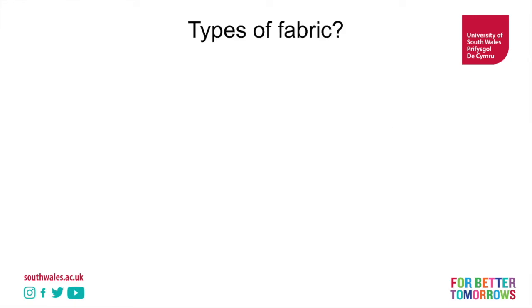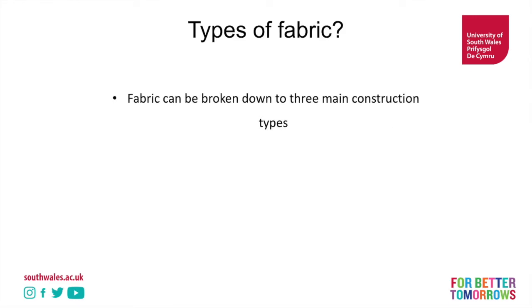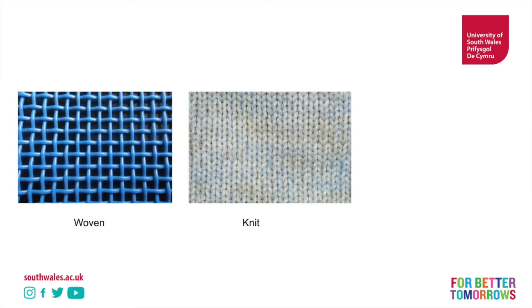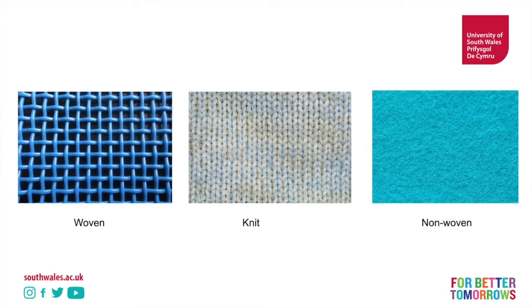So what types of fabrics are there? Fabrics can be broken down into three main construction types. We often talk about fabric in terms of construction — meaning, how is the fabric made? The three main types are woven, knit, and non-woven. With woven you can see very clearly it looks woven; with knit you can see the interlocking loops; and with non-woven, all the fibres are going in lots of different directions and are kind of compressed together.